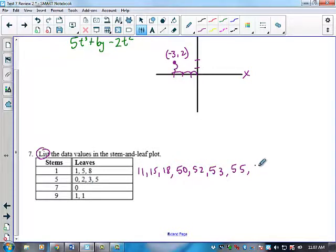Next line, I have 70. Next line, I have 91, and I have to show it both times.